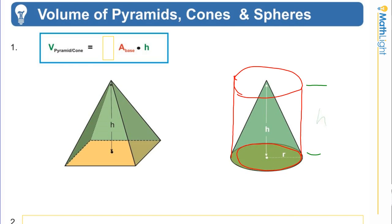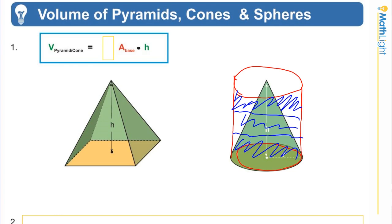If I were showing you in the classroom, when I poured the first cone of water in it would come up to about here, the second one to about there, and the third one right to the top. So what's the relationship between the volume of a cone and the volume of a cylinder? It's one third. You can do the exact same thing with a pyramid and a prism — same size, it's going to be one third area of the base times height.